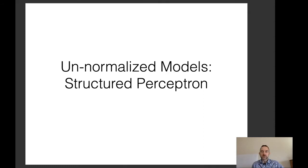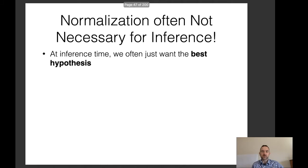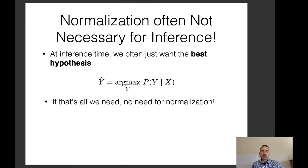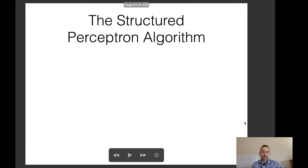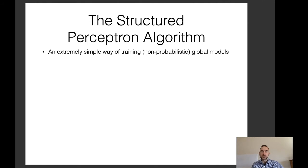Unnormalized models are not probabilistic models, but can still be used to train a model that produces good outputs. At inference time we often just want the best hypothesis — we're doing an argmax — so we don't actually need to normalize if all we're doing is taking the argmax. The structured perceptron algorithm tries to encourage exactly that. It's an extremely simple way of training non-probabilistic models: we find the one best, and if its score is better than the correct answer, we adjust the parameters to fix this.